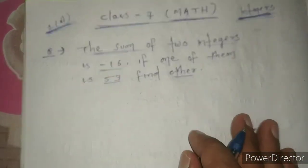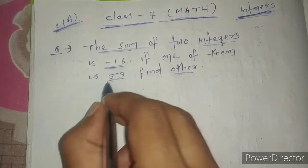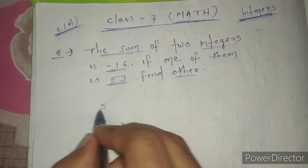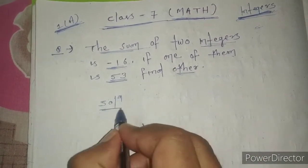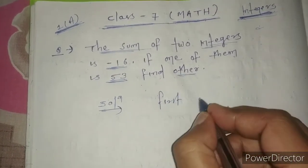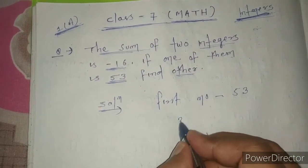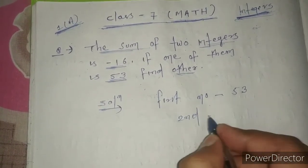So let's see, we have two integers with sum of minus 16, and one is 53. For the solution, the first integer is 53, and the second integer we need to find, let's call it x.